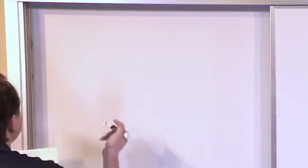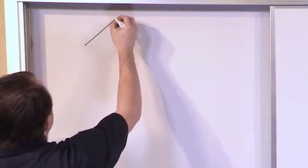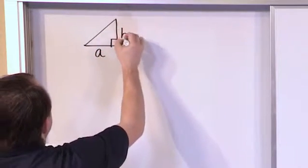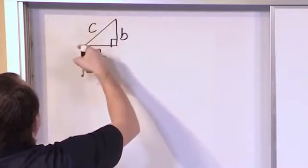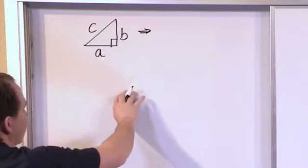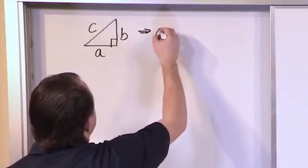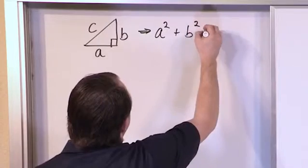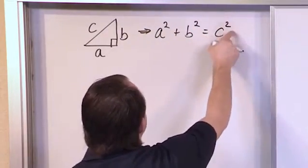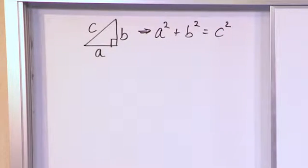We call them Pythagorean because they come from the Pythagorean theorem, which all of you should remember. If you have a right triangle with 90 degrees, one side called A, one side called B, and the longest side called C — that's the hypotenuse — then A squared plus B squared equals C squared. You square the two shorter sides and set them equal to the longest side squared. That's the Pythagorean theorem.